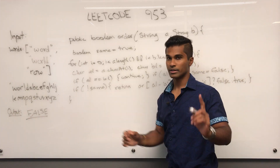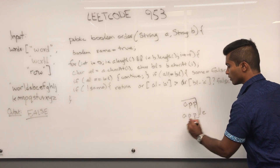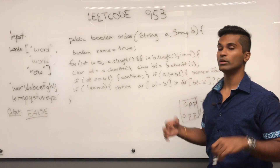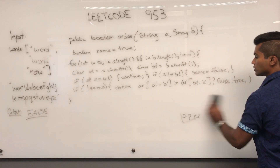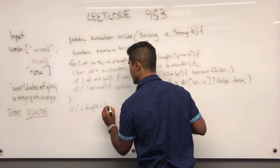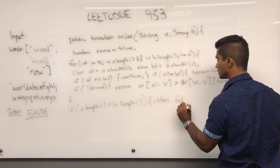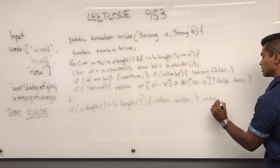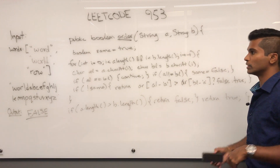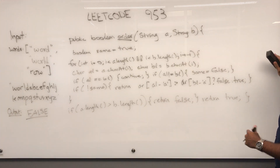One edge case: if we had 'app' and 'apple', they're both the same up to the first three letters, but the shorter word must come first to be considered lexicographic. So we write: if a.length() is greater than b.length(), return false; else return true. That's the complete helper method 'order', which is how we compare any two words.